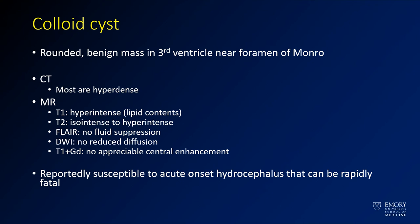The vast majority of these are hyperdense on CT, which makes them relatively easy to see. On MR they can be a little variable, but they tend to be hyperintense on T1 and iso to hyperintense on T2.